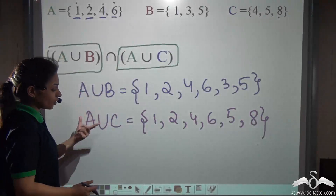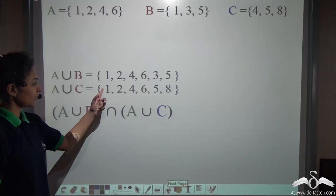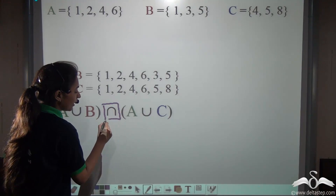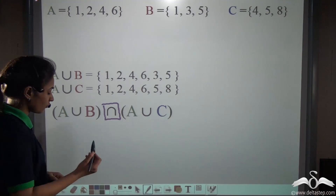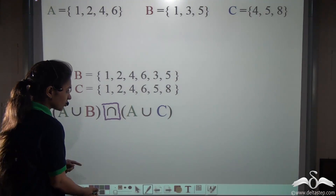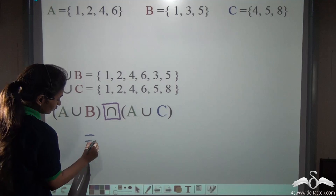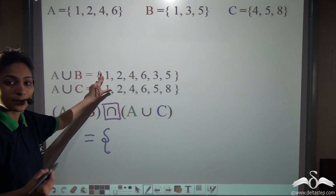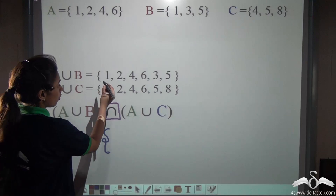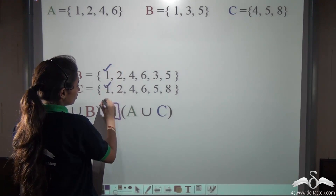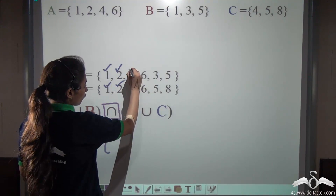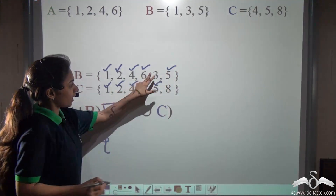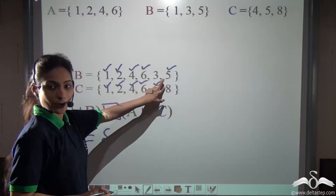Now we have got A union B and A union C. Now what do we have to do? We have to find out their intersection. Intersection means finding which elements are present in both. You can see 1 is present in both, 2, 4, 6 and 5. 3 and 8 are not present in both.